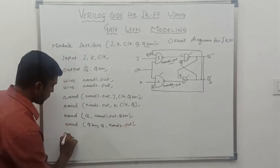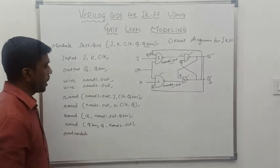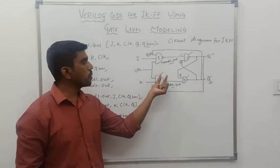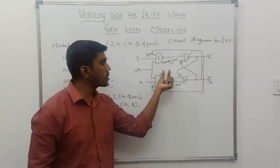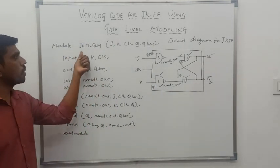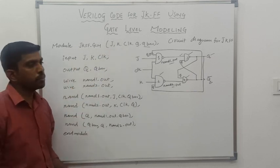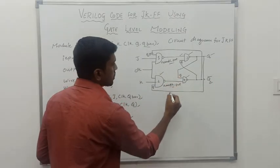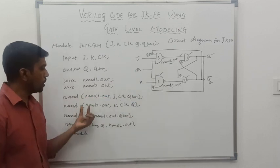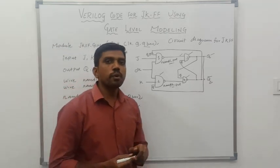Then the final instruction is endmodule — all the functions are over. This is the simple program for JK flip-flop using gate-level modeling. First you draw the logical diagram for JK flip-flop, which uses four NAND gates. Next we declare the module, module name, number of inputs, and number of outputs. Afterwards we declare the input variables and output variables. In this logical diagram we use two wire signals: NAND 1 out and NAND 2 out. These four statements declare the operations of each NAND gate.